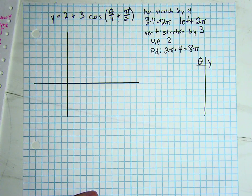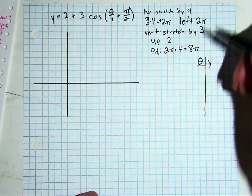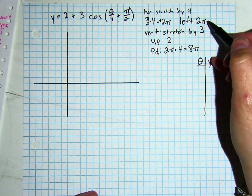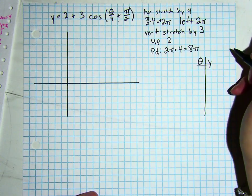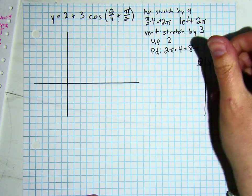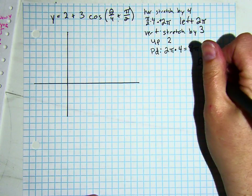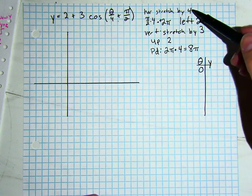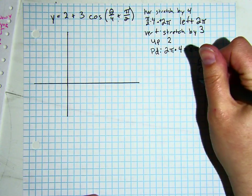But we want to deal with our horizontal stretches first before we deal with our left 2 pi. Our next important point is at pi over 2, so pi over 2 times 4 is 2 pi.